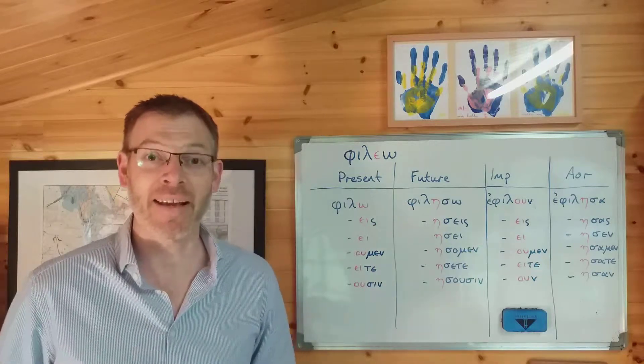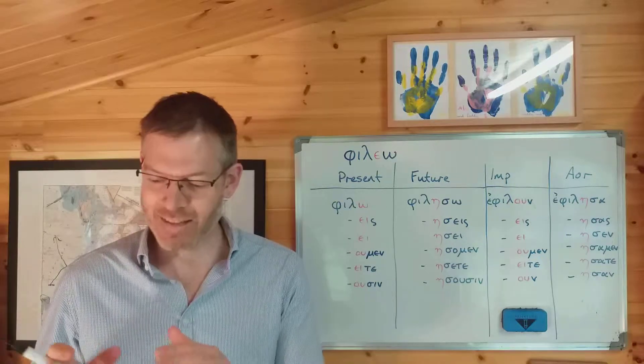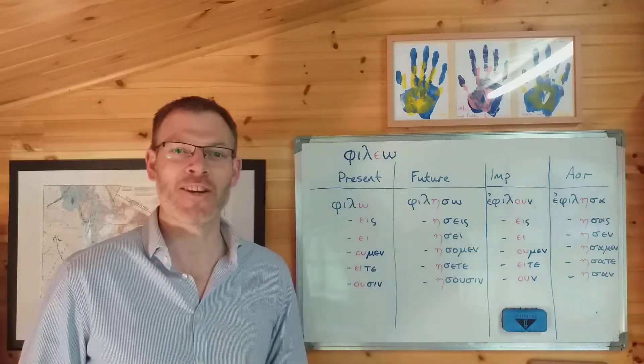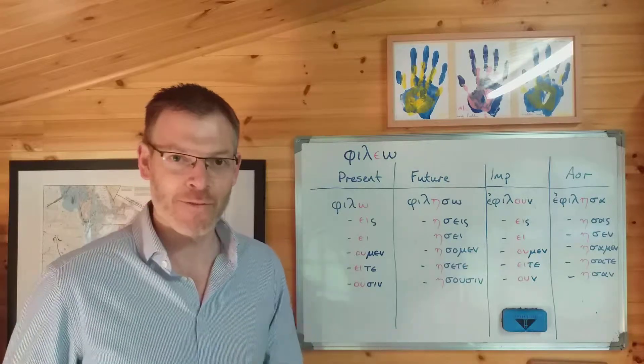Hi everybody, welcome back. We're looking today at Jeremy Duff, Elements of New Testament Greek. We are looking at section 6.8 and that means we are looking at the tenses in the εω verbs, the epsilon verbs.